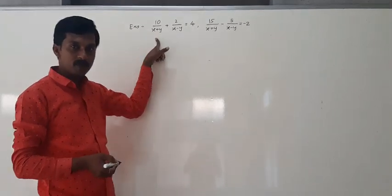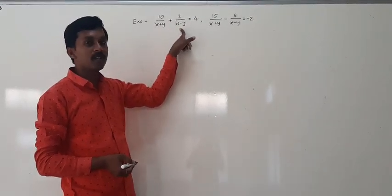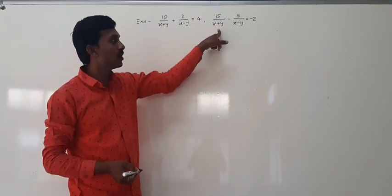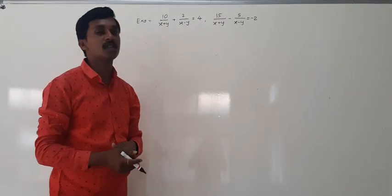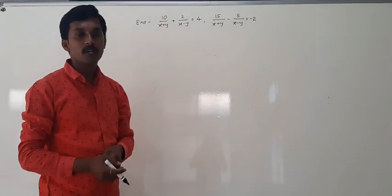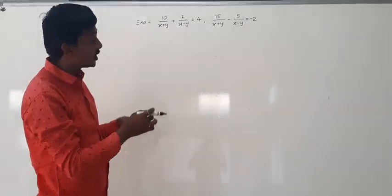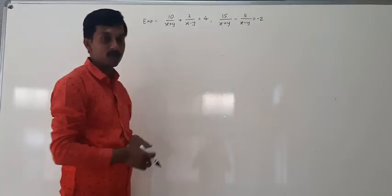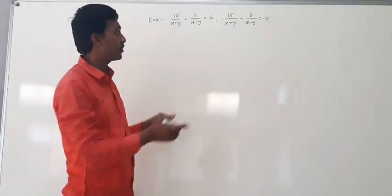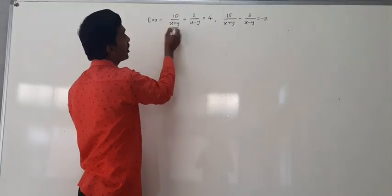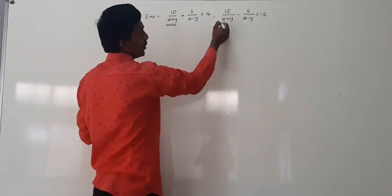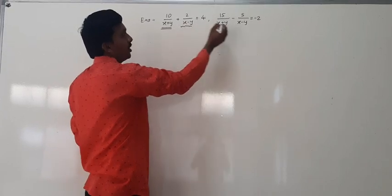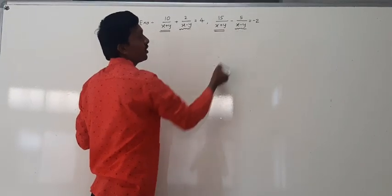The first equation is 10 upon (x plus y) plus 2 upon (x minus y) is equal to 4. The second equation is 15 upon (x plus y) minus 5 upon (x minus y) is equal to minus 2. Both variables x and y appear in the same terms — the denominator x plus y appears in both equations, and so does x minus y.